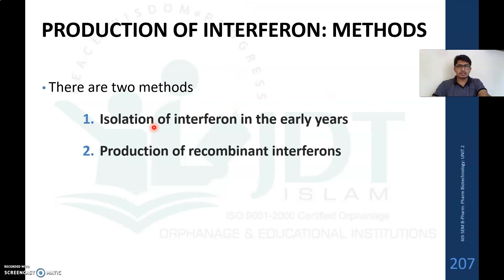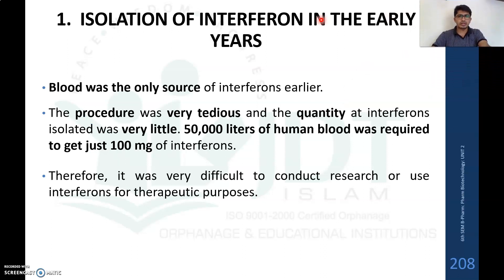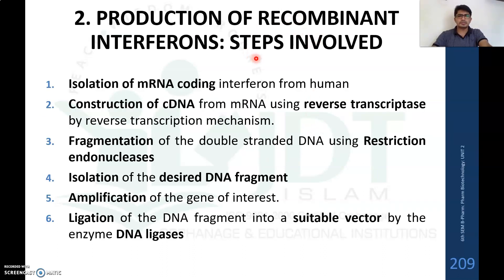There are two methods of interferon production. The first is isolation directly from blood, which is no longer used today. In earlier years, blood was the only source; the procedure was very tedious and the yield was extremely low — approximately 50,000 liters of human blood were required to obtain just 100 milligrams of interferon. Due to these difficulties, recombinant DNA technology is now used for production.